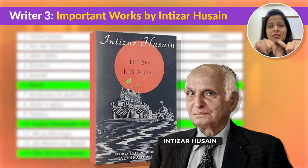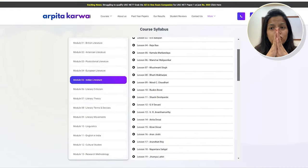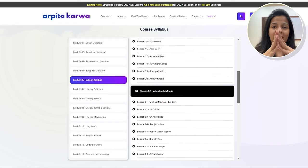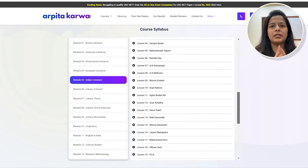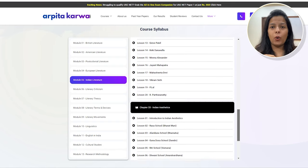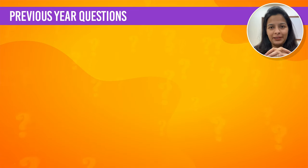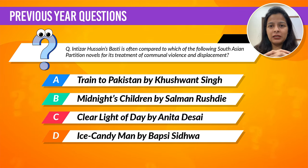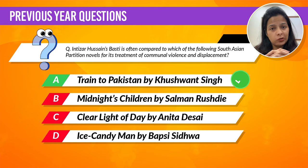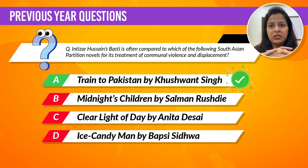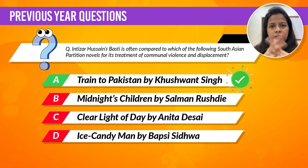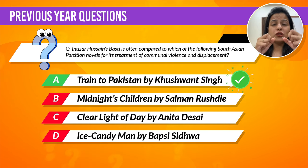Apart from the works discussed in this video, there are many more important partition writers you should study to ace UGC Net English — about 800-plus writers in total. A detailed free list is available at arpatakarwa.com. Now let's look at some previous year questions from partition writing. The first question shows that both Basti and Train to Pakistan deal with the aftermath of partition, focusing on themes of communal violence and displacement, and provide a powerful portrayal of the emotional and cultural trauma caused by partition.